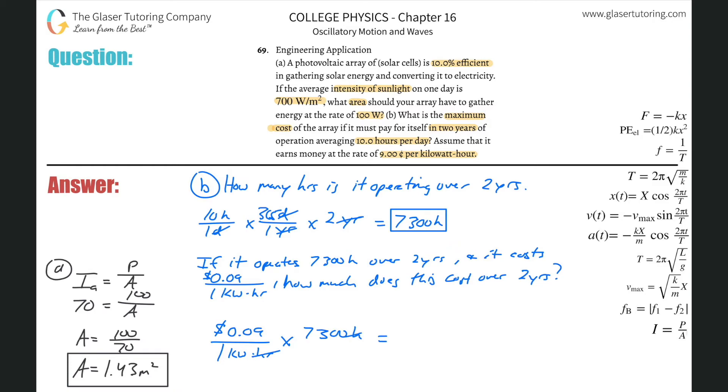So this is going to be 0.09 multiplied by 7,300. And what do we get? We get about $657. Now this, we have to be careful. I should say this is really, if it operates, how much does this cost over two years per kilowatt. So per kilowatt, it's going to basically cost this amount, $657 per one kilowatt. So this is basically per kilowatt. But I don't want to know that, I don't want to know kilowatt, I just want to know dollars, how much does it cost? So I got to get rid of this kilowatt somehow.